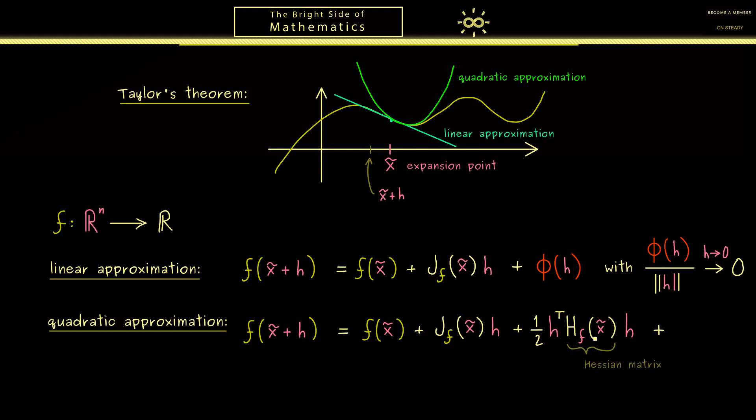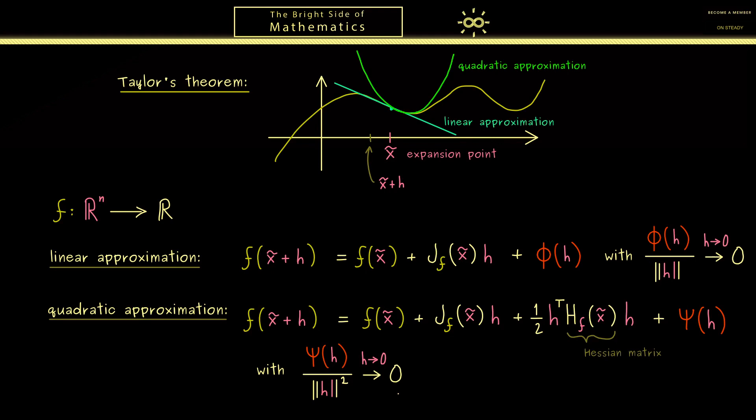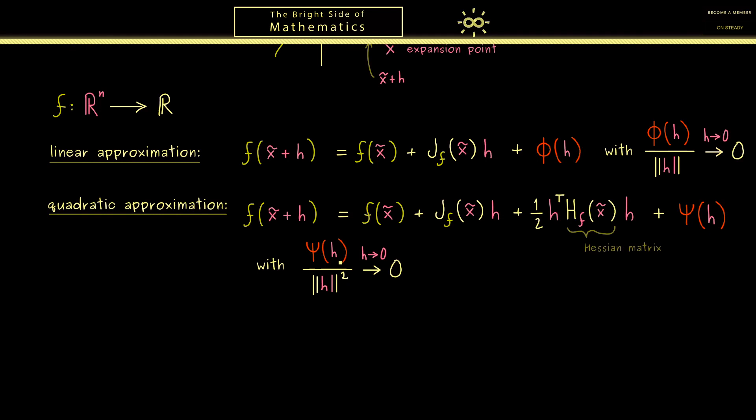And then of course, we also need an error term and maybe we call it ψ now. And as before, this should go fast enough to zero when h tends to zero. And in order to have a good quadratic approximation, it should go faster to zero than h squared. Therefore, we have to divide this term here by the norm of h squared. Ok, with this I would say, now we have the whole idea how we can generalize Taylor's theorem in multivariable calculus, such that we now can write down the theorem.